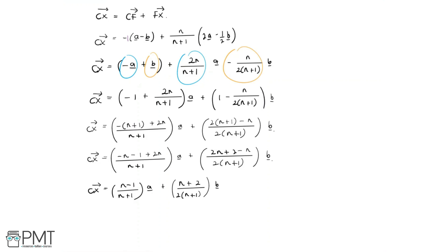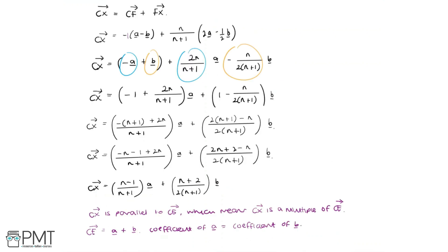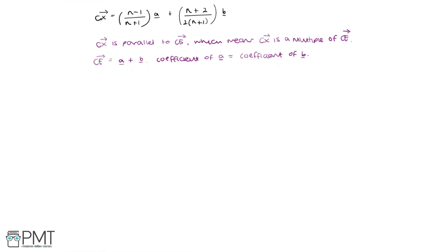Since CXE is a straight line, CX is parallel to CE. The vector CE equals a plus b, where the coefficient of a equals the coefficient of b. Because CX is parallel to CE, the same principle applies: in vector CX, the coefficient of a must equal the coefficient of b. So we set N minus 1 over (N plus 1) equal to N plus 2 over 2(N plus 1).